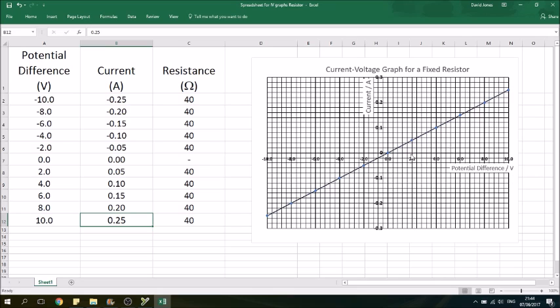And for every 2 volts we added, we've got an extra 0.05 amps of current flowing through the resistor. So this graph plots as a straight line, a proportional relationship, a straight line that goes through the origin. And the other thing we need to talk about is resistance.